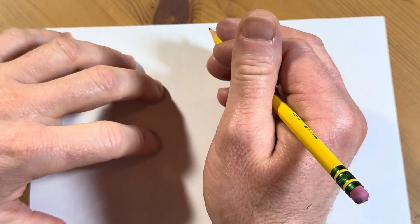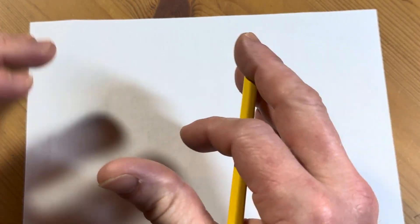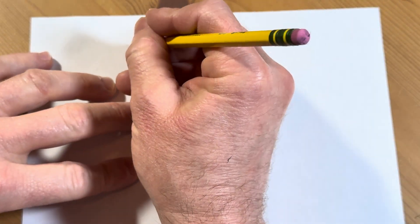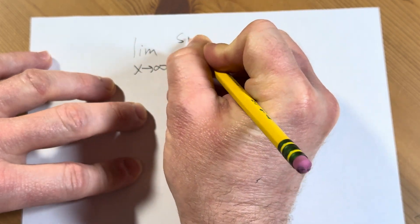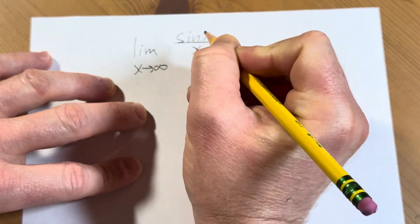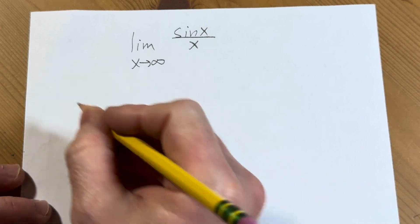Hello, in today's video we have not a particularly challenging problem, but I think an interesting one, so I thought I would just share it with you. So, it's the limit as x approaches infinity, sine x over x. I'm just going to go through it really quickly, just knocking out some math problems here. So let's do it.